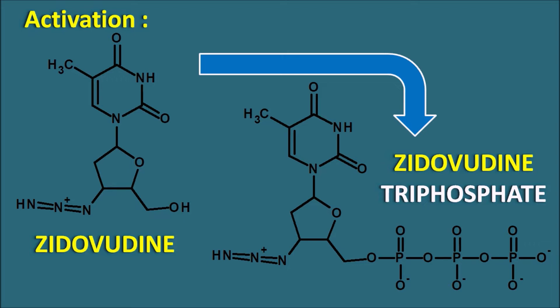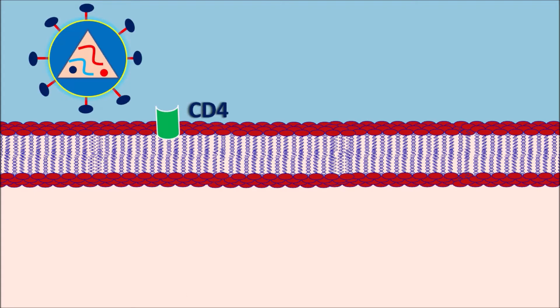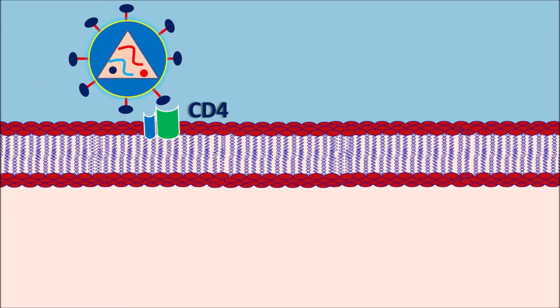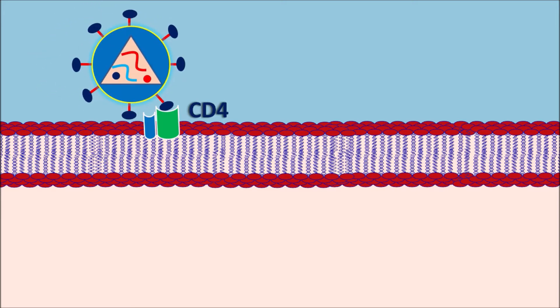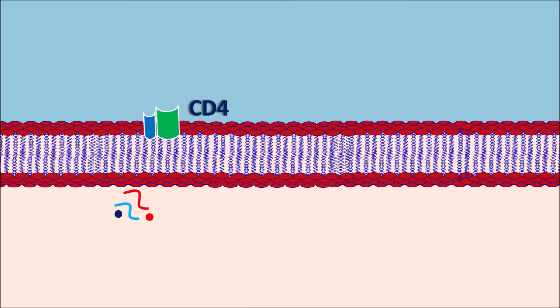Let us see how this drug acts in HIV infection. The HIV cell has an outer lipophilic core attached with glycoproteins — particularly GP41 on the outer core, which is responsible for attachment of the viral cell to the host cell. On the host cells, CD4 cells are expressed along with CCR5 co-receptors. The viral cell binds to the CD4 cells, which is responsible for stimulation and entry of the viral cell into the host cell. After entry, the viral cell releases its components, including the reverse transcriptase enzyme.